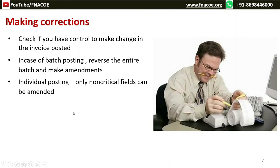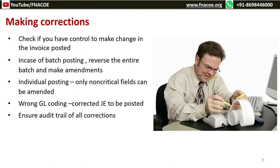If the invoice is posted to the wrong GL code, a journal entry must be posted to correct the accounting code. If a vendor is overpaid or the wrong vendor is paid, a debit memo should be created, approved, and processed in order to recover the amount. If an invoice is processed for less than the actual amount, a copy of the invoice can be used to process the difference amount. In certain cases, recovery can be done through a refund request.